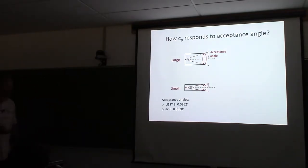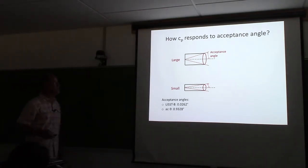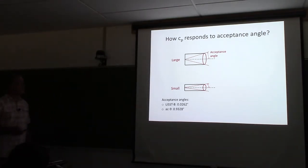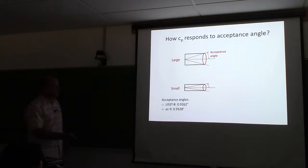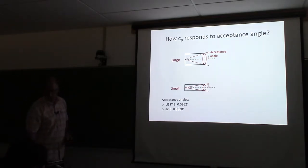The LISST responds to these Schlieren because it has a small acceptance angle. Remember, the LISST acceptance angle is 0.02 degrees.